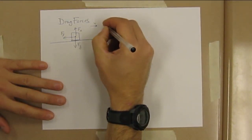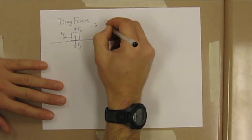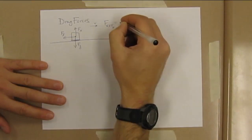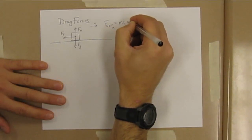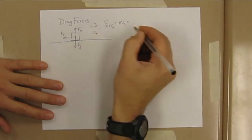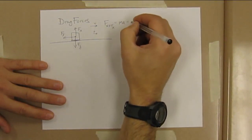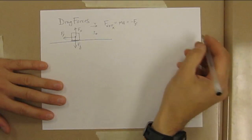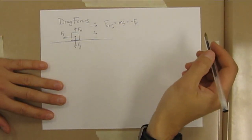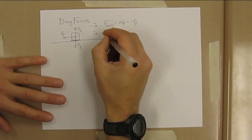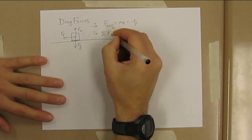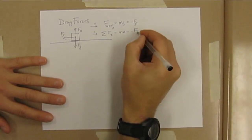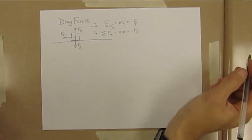If we were to write our F_net equation, you could write this two different ways. You can write F_net in the x direction equals ma. Let's call to the right positive, so our force of friction would act to the left, so it'd be minus force of friction. You could also do this as sum of the forces in the x—it's really just the same thing, either way you were taught.